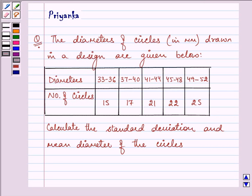Hello friends, how are you all today? The question says the diameter of circles in millimeter drawn in a design are given below. Now here, the diameter and the number of circles which we are given, we need to calculate standard deviation and the mean diameter of the circles.